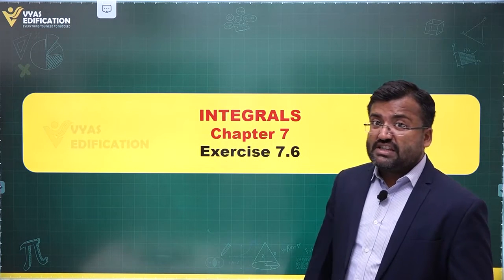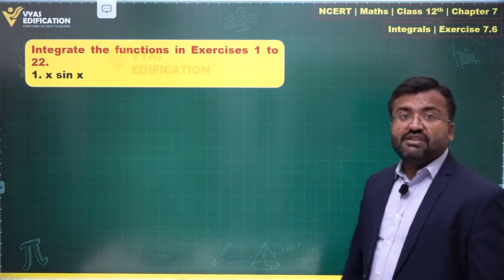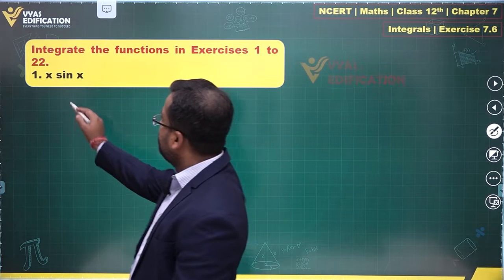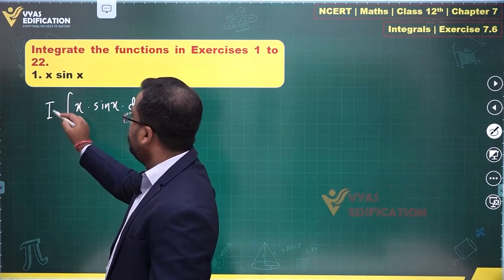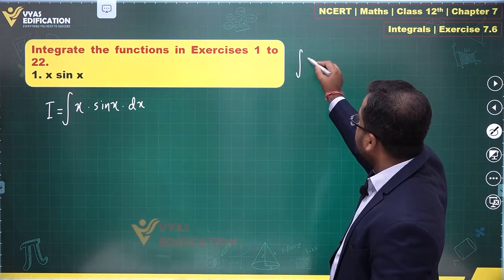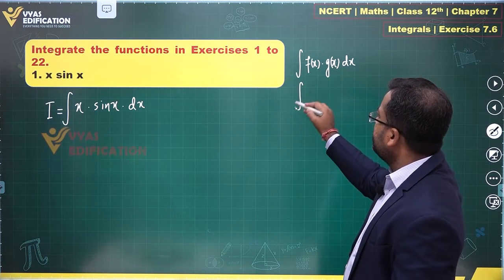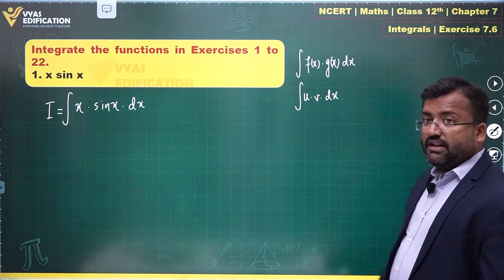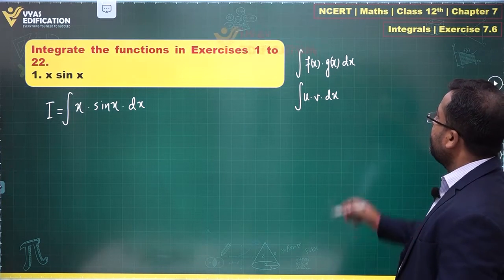Along with the formula, we need to know which function to take as first and which as second. Beginning with the first question: integrate x·sin(x) dx. By parts, when we have a product of two functions dx — also written as integral of u·v dx, where u is f(x) and v is g(x) — this is also known as the UV rule.